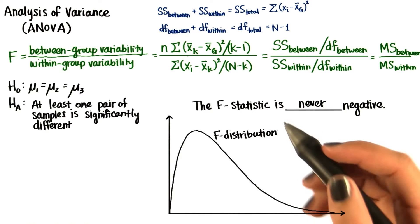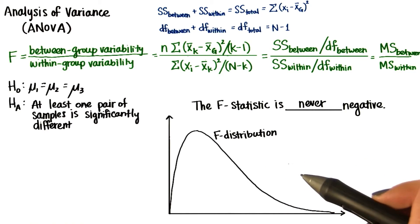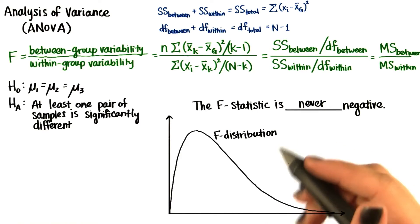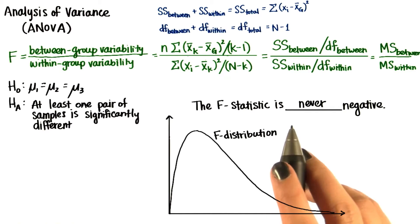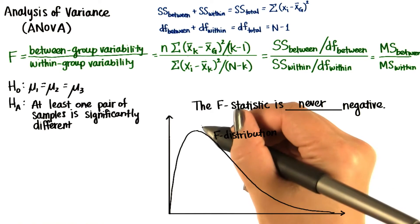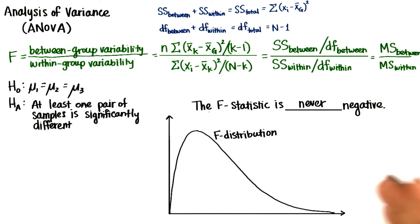Unlike the z and t tests, the distribution of the F statistics is not symmetrical. The F distribution is positively skewed, meaning it peaks on the left side and is stretched out to the right side.